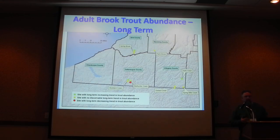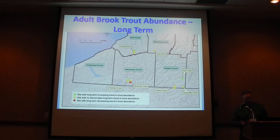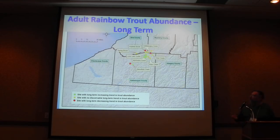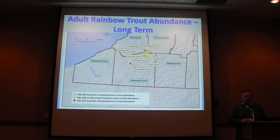Looking at adult brook trout long-term abundance, there's not as much of a clear pattern regionally — a few streams increasing, a few decreasing. We don't have a lot of sites for brook trout in this sampling, and many don't have much survey data prior to 2016. Also, the literature shows that brook trout populations naturally have a lot of variation. Same story for rainbow trout — our wild rainbows are all in the Upper Cattaraugus Creek watershed; McKinstry Creek and Lime Lake Outlet show long-term increases, and many others show no discernible trend.